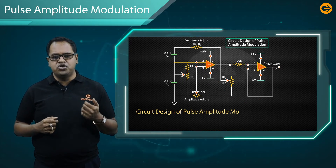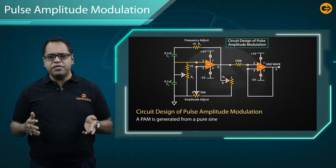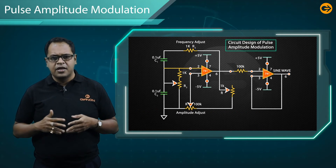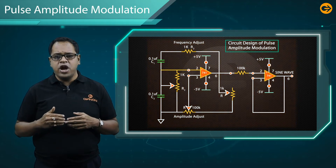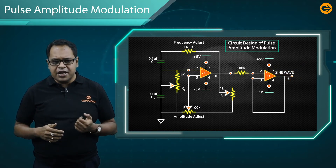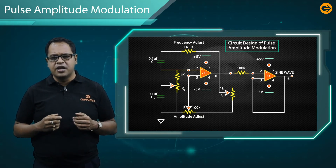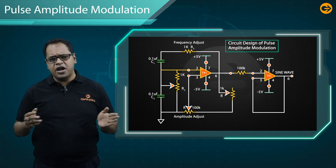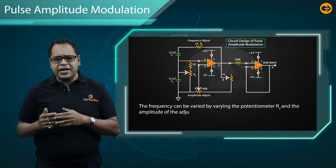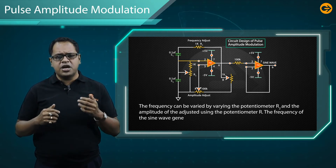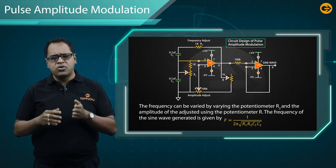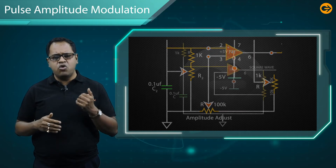A PAM signal is generated from a pure sine wave modulating signal, a square wave generator which produces the carrier pulse, and a PAM modulated circuit. The sine wave generator is based on a Wien bridge oscillator circuit, which can produce a distortion-less sine wave at the output. The amplitude and frequency of the oscillator can be adjusted using a potentiometer. The frequency can be varied using potentiometer R2, and the amplitude is adjusted using potentiometer R. The frequency of the sine wave is given by F = 1 / (2π √(R1·R2·C1·C2)).